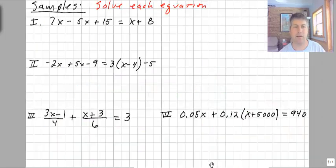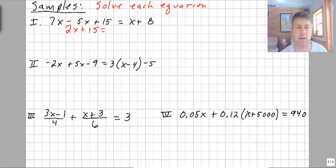Now we go to page 3. Here are the sample problems. We're going to solve each equation for x. We have 7x minus 5x plus 15 equals x plus 8. I can combine the 7x and the 5x. Those are like terms. So we get 2x plus 15 equals x plus 8.